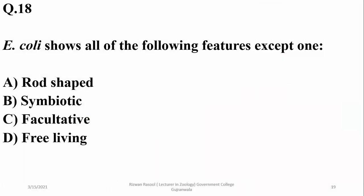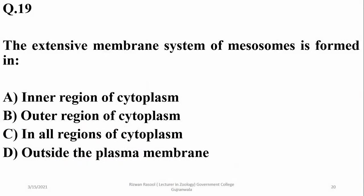Question 18: E. coli shows all of the following features except one. They are rod-shaped, symbiotic, and facultative, but they are not free-living as they live symbiotically with other organisms, especially in the large intestines of mammals. The extensive membrane system — the mesosome — is formed in the outer region of the cytoplasm.